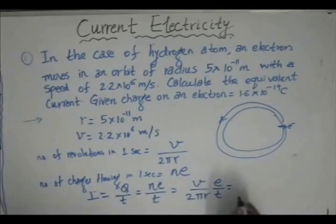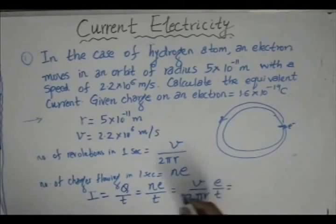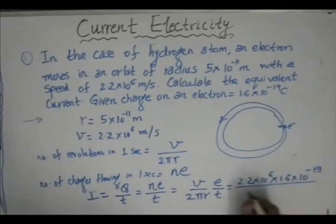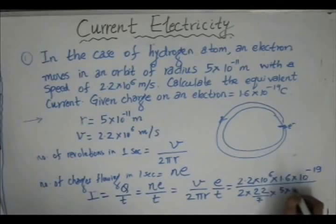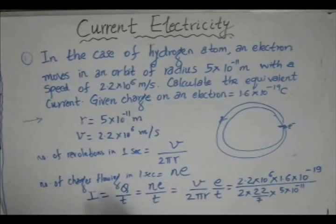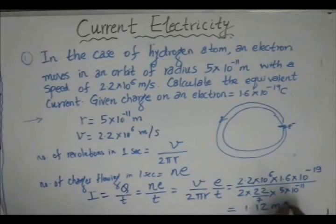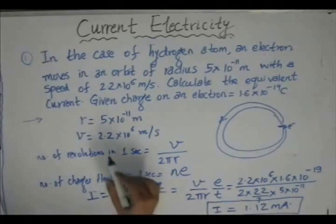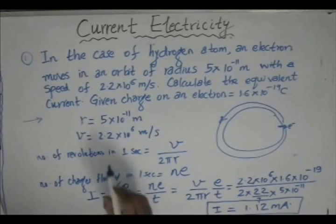After substituting the values — drift velocity 2.2 into 10 to the power 6, charge 1.6 into 10 to the power minus 19 coulomb, taking 2π as 22/7, and radius 5 into 10 to the power minus 11 meter, with t equal to one second — after solving this equation, we get I equals 1.12 milliamperes. This is the value of the equivalent current for a hydrogen atom wherein the electron travels with a speed of 2.2 into 10 to the power 6 in an orbit of radius 5 into 10 to the power minus 11 meter.